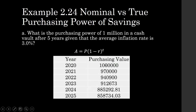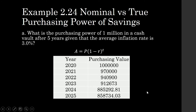One million pesos today will have become only 970,000 by next year — a loss of 30,000 pesos in purchasing power. By 2022 it will be further reduced to 940,900 pesos. And by 2025, after 5 years, when you open the cash vault it is still physically 1 million, but its true purchasing power has been significantly reduced to 858,734 pesos. When you use that 1 million in 2025, it can no longer buy the same goods and services it could in 2020.